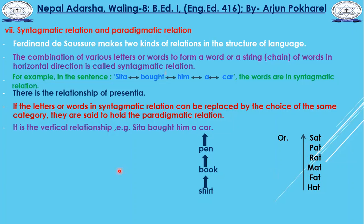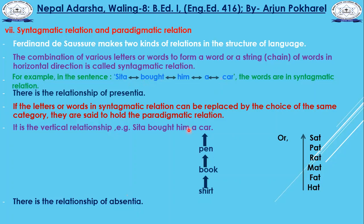Paradigmatic relation has the relationship of absentia, while syntagmatic relation has the relationship of presentia. Paradigmatic relationship is the relationship of absentia — the replaced word is absent in the sentence. Syntagmatic relationship is the relationship of presentia — all words are present in the sentence. You can find the differences between syntagmatic and paradigmatic relations in this way.